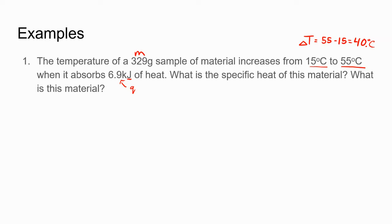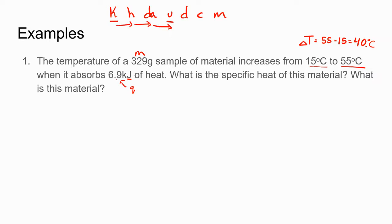The K in front of J stands for kilo, and we don't want kilojoules — we just want joules. Using the King Henry mnemonic, we go from kilojoules to joules: that is three letters to the right, so we move the decimal three places to the right, giving us 6900 joules.